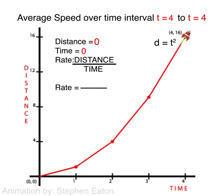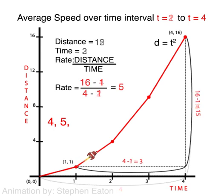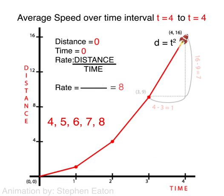that is, the instantaneous rate of speed, will be 8 miles per minute. 4, 5, 6, 7, and 8.